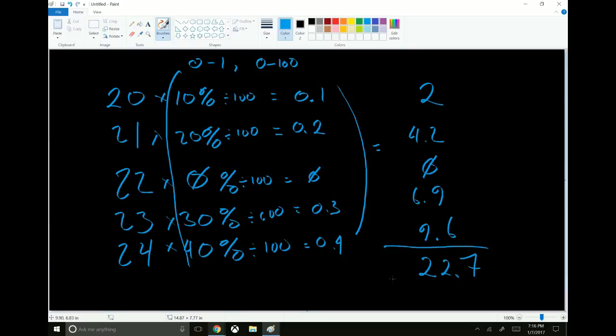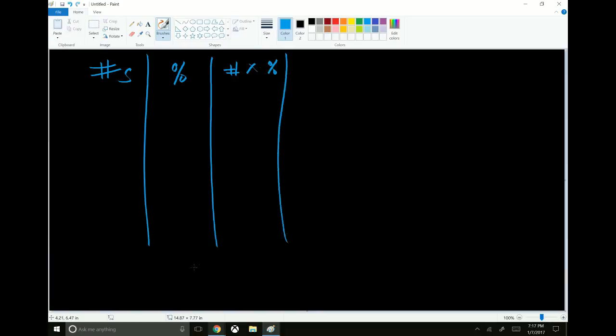Alright. So this, the 22.7 is the average weight. So just to recap that in a slightly more clear form. What you do is you'll have your numbers, you'll have your percentage, then number times percentage, then you take the sum of all of those. Remember to divide by 100 here.